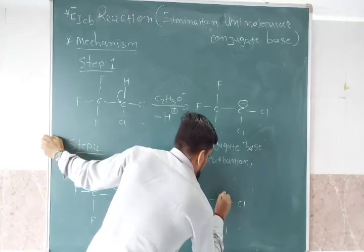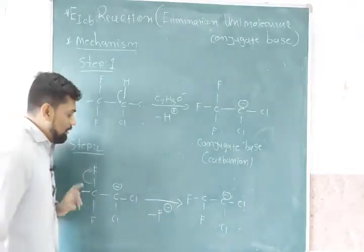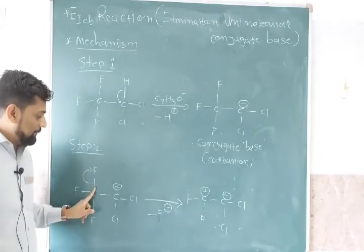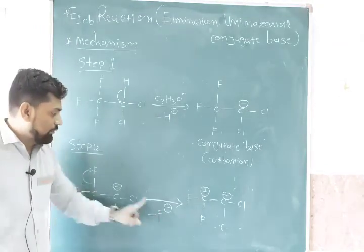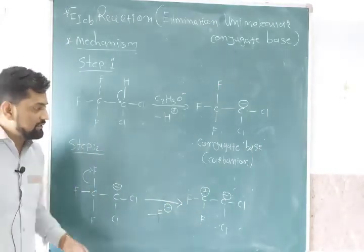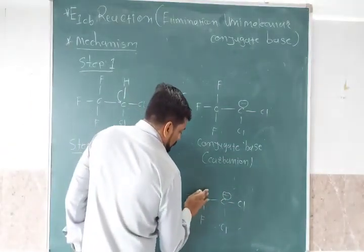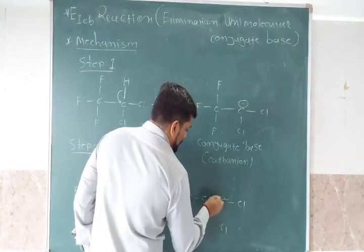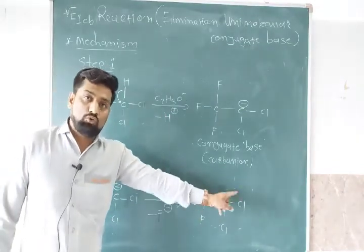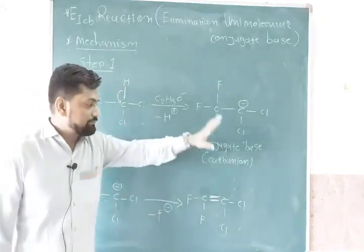When F⁻ is removed, the electrons go with fluorine, making that carbon positive. So F⁻ leaves with electrons, giving a negative on fluorine and positive charge on carbon — positive and negative bond formation occurs, resulting in a double bond, and alkene is formed: 1,2-difluoro-1,2-dichloroethene (F2C=CCl2).